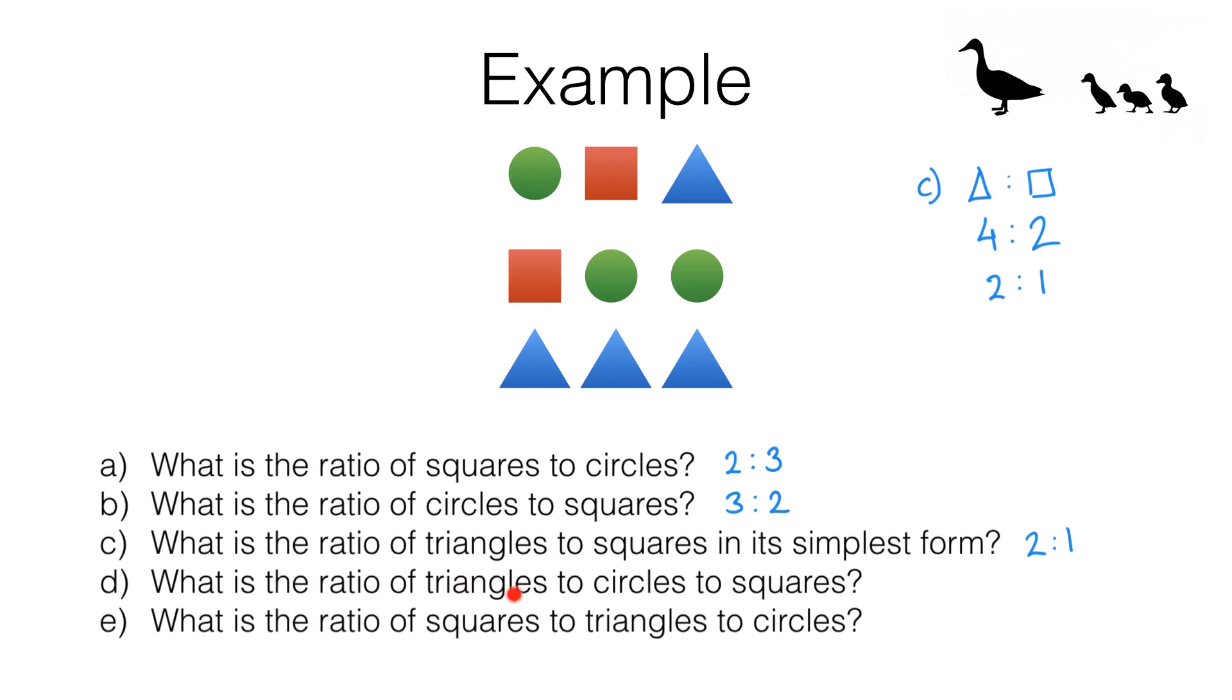In this case we want triangles to circles to squares. And we've got four triangles, three circles and two squares. So that's a ratio of 4 to 3 to 2. Now in this case we can't simplify this ratio. We don't have a common factor between 4, 3 and 2.